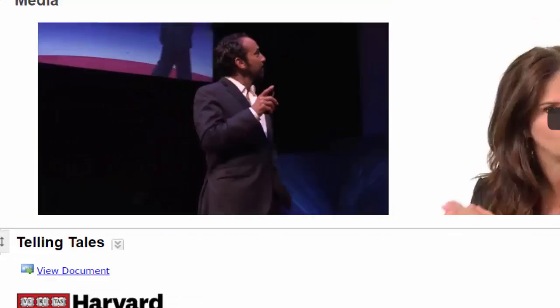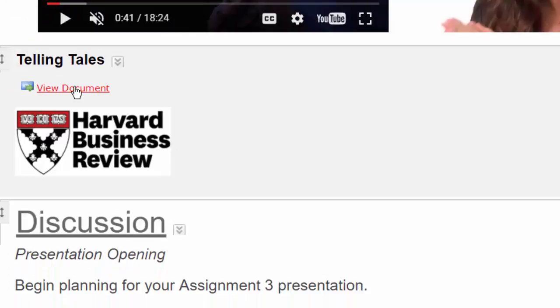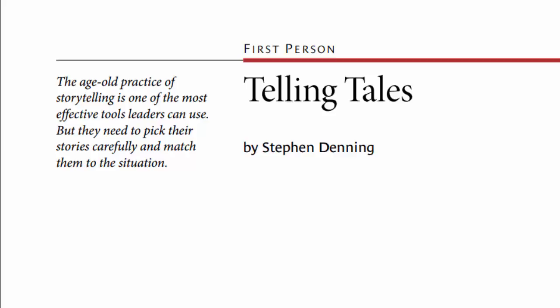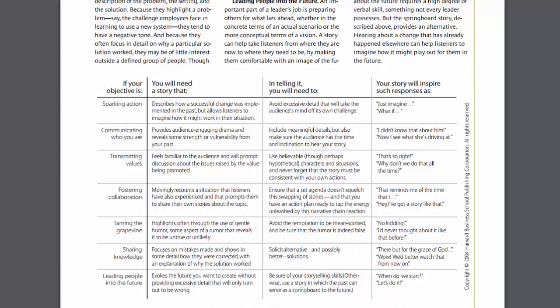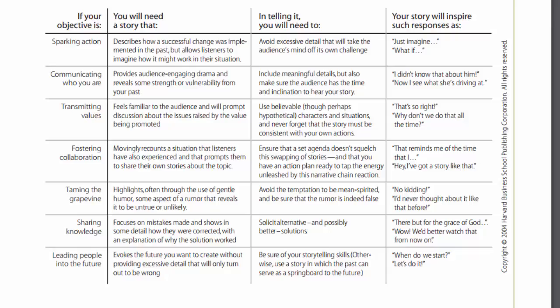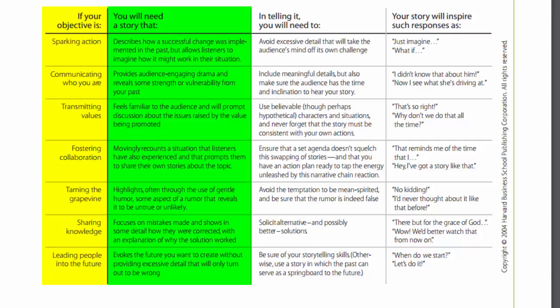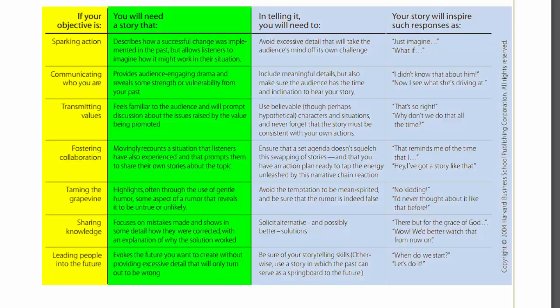Here is an outstanding document from the Harvard Business Review. One of the things I like best about it is this table. Print it out, cut it out, save it, laminate it. On the left you have different objectives you wish to achieve by telling your story, then the kind of story you'll need to achieve that objective, and then tips and techniques for carrying it out. A really excellent tool that I think you should save for the rest of your career until you have it memorized.